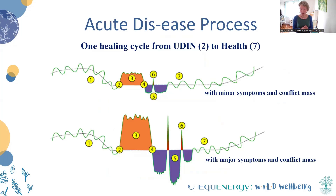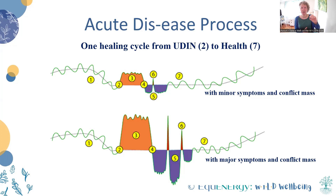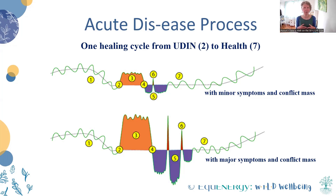Going back to acute versus chronic, I showed you the diagram of what an acute disease looks like, and that was a very simplistic diagram. They can vary, as I show here on this slide. Sometimes they are very short and not very intense. The height of the red stress phase and the depth of the bluish-purplish regeneration part isn't all that deep or high, because the intensity isn't very big — the trauma itself wasn't a very big trauma, so we're relatively able to easily process that and move on through.